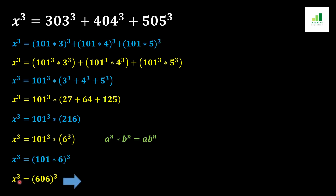In the next step, we apply the cube root — or one-over-three power — on both sides of the equation, and we get x = 606. This is the value for this expression. I hope this video will be very useful to all of you. If you like this video, please hit the like button and subscribe to our channel. Thank you.